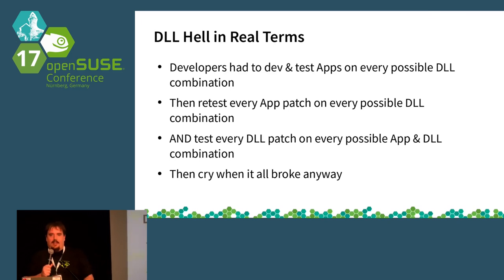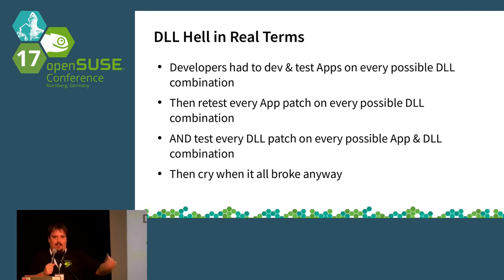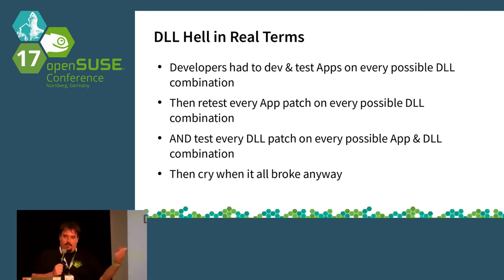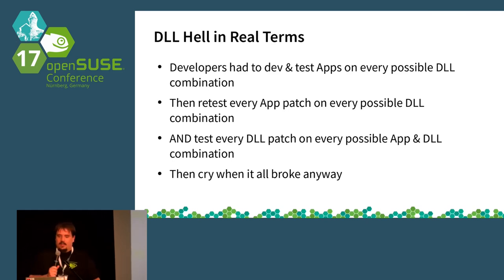In the Windows 3.1 world, developers had to test every single possible DLL combination that might be seen in the wild, possibly anywhere. Then every time they had a patch, test that app patch in every single combination everywhere. And then when there was a dependency or library patch, test everything in every single combination everywhere. They would try, and Windows was being used everywhere, and then they'd cry, because it would all break anyway and go horribly, horribly wrong.